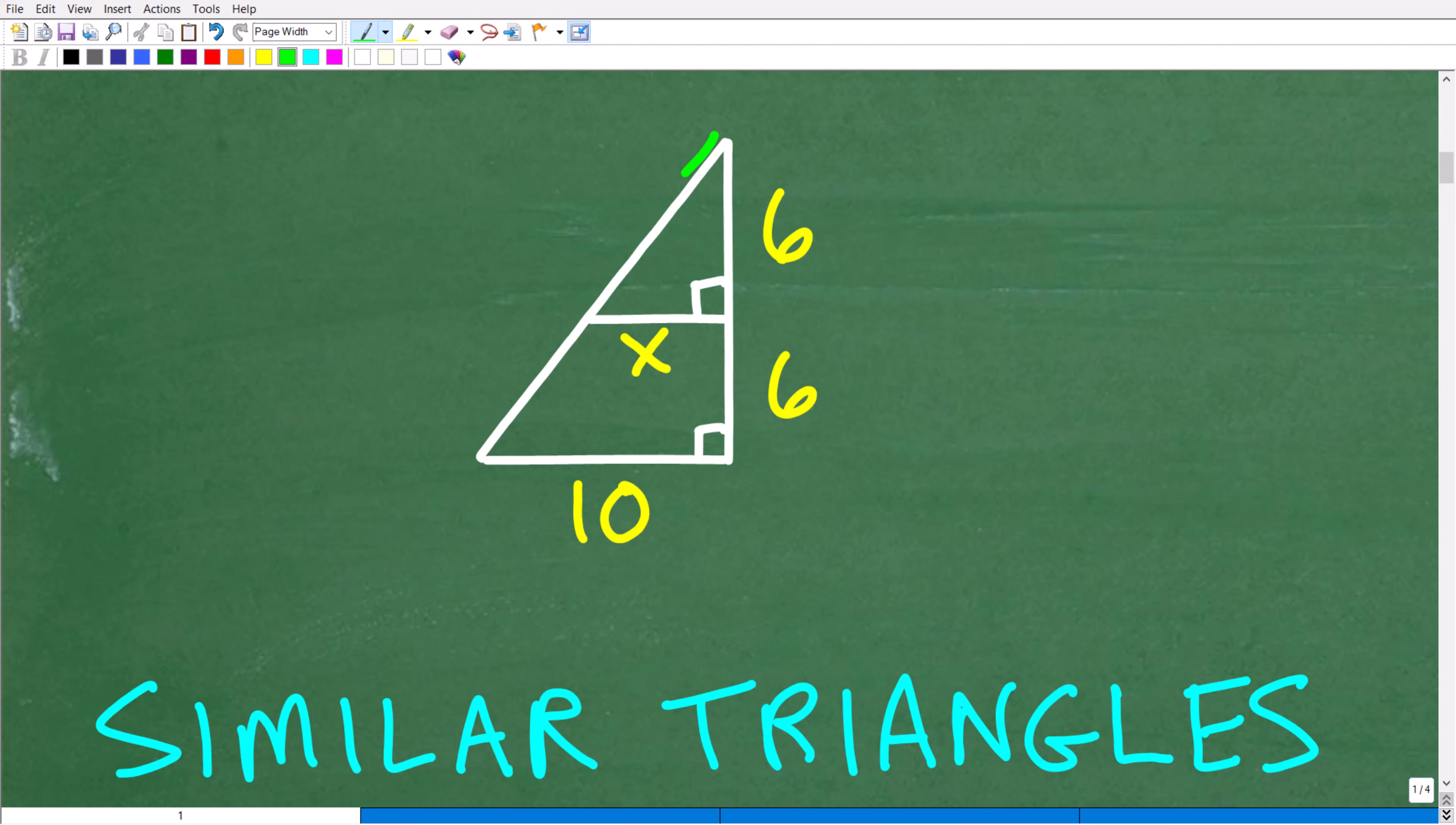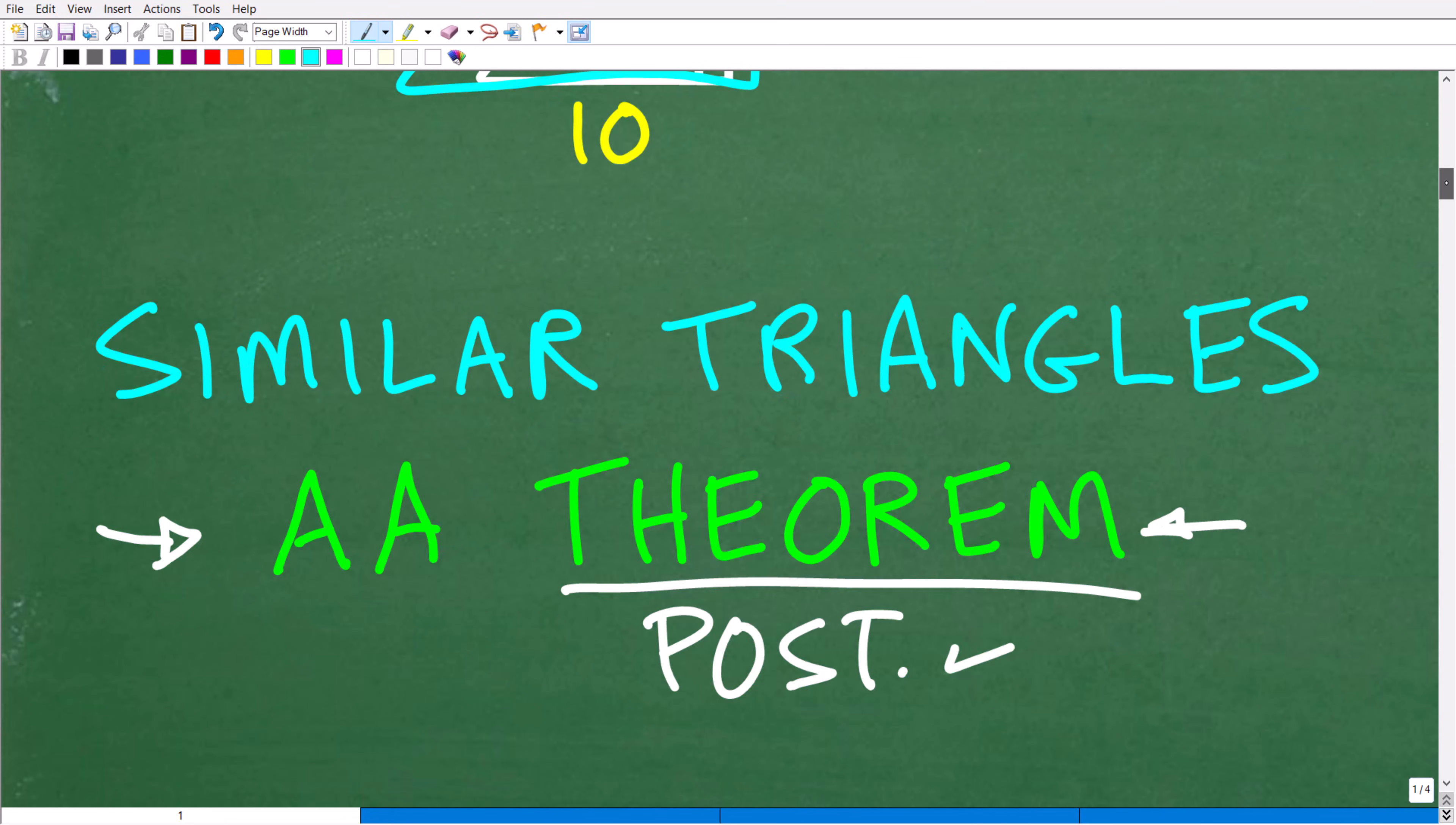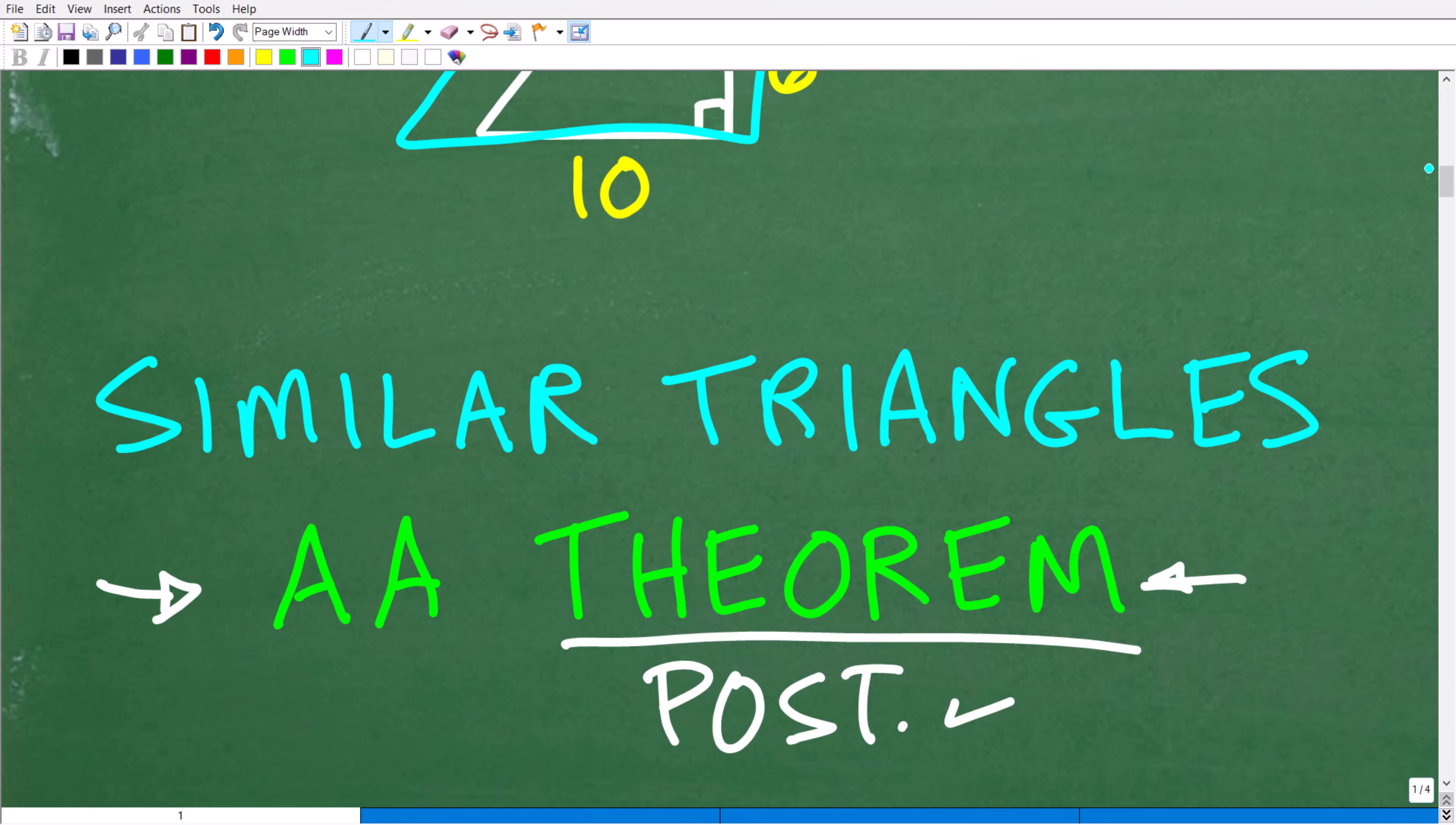Now, if we notice our little figure, we have a triangle right here. There's one triangle, and then we have this other bigger triangle, and these two triangles are similar triangles. So what is a similar triangle? Well, we need to understand that, and then we need to understand this angle-angle theorem.